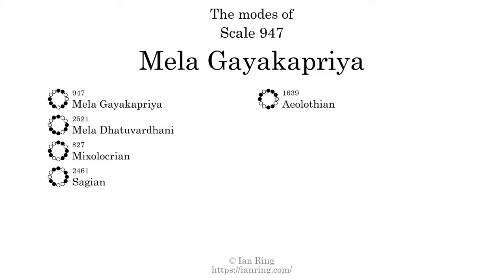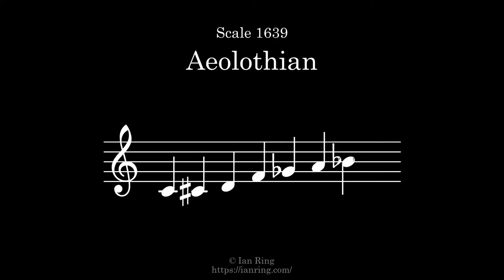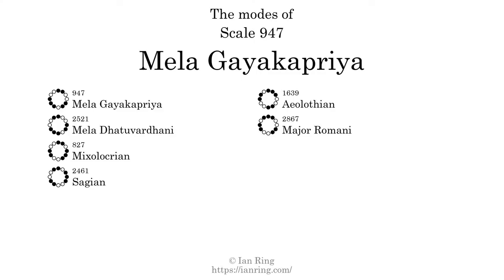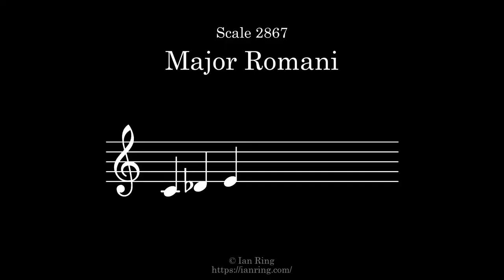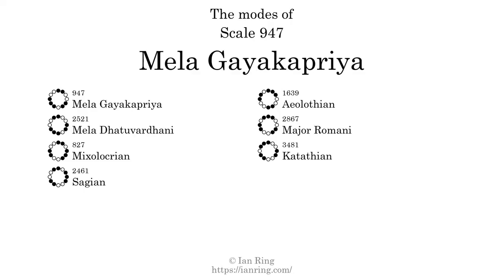The fifth mode is Scale 1639, also known as Iolothian. It sounds like this. The sixth mode is Scale 2867, also known as Major Romani. It sounds like this. The seventh mode is Scale 3481, also known as Catathian. It sounds like this.